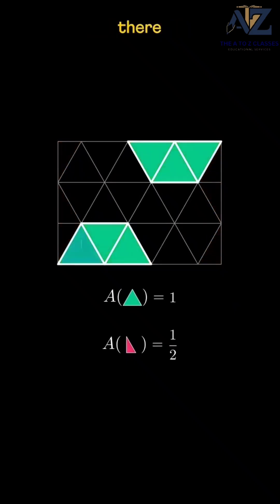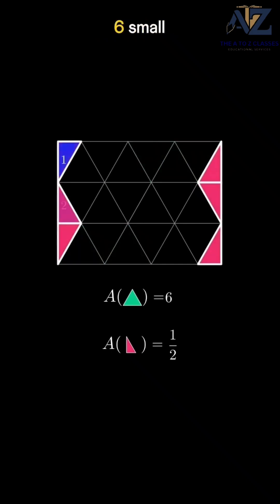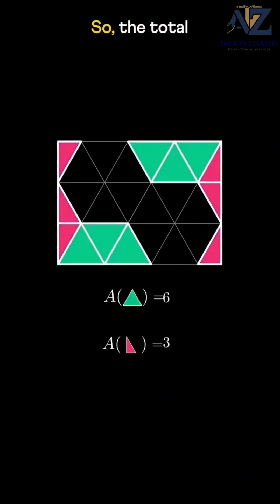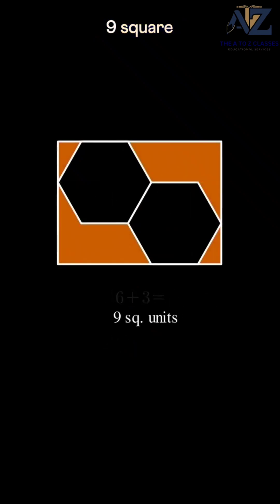Now in our shaded area, there are a total of six large triangles, making the area six, and six small triangles, making the area three. So the total shaded area is nine square units.